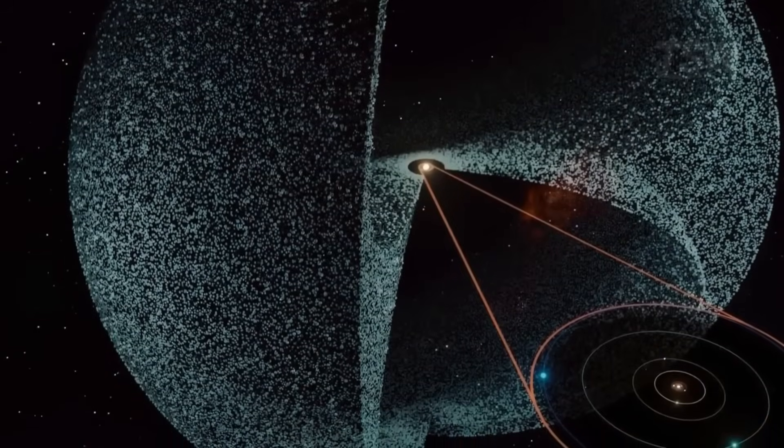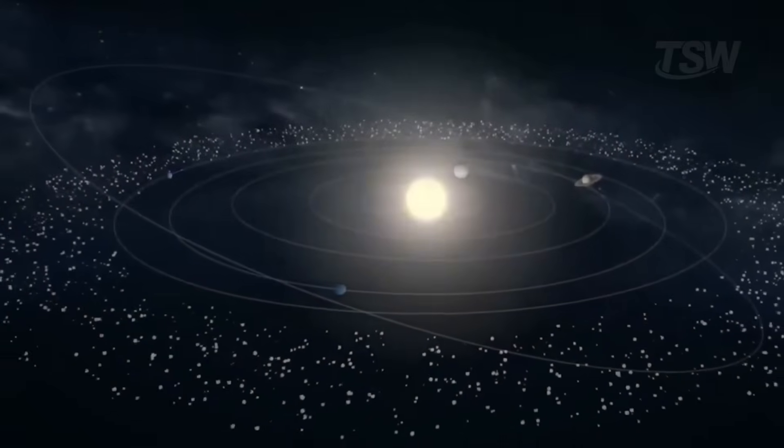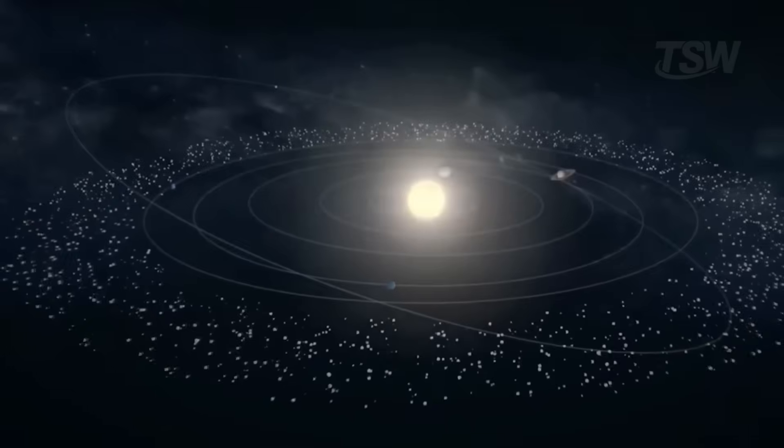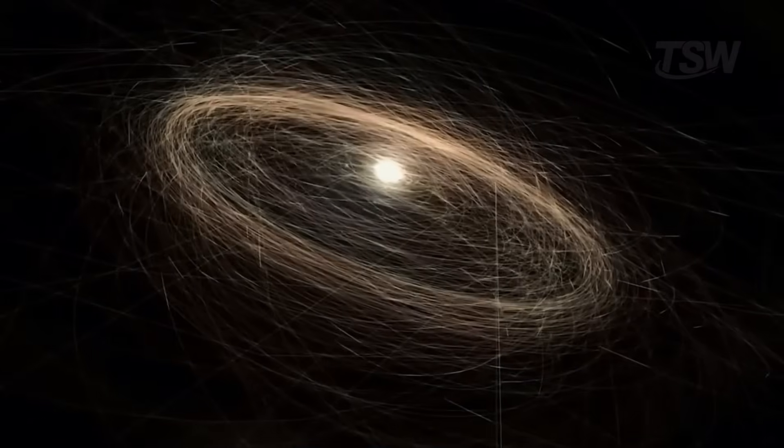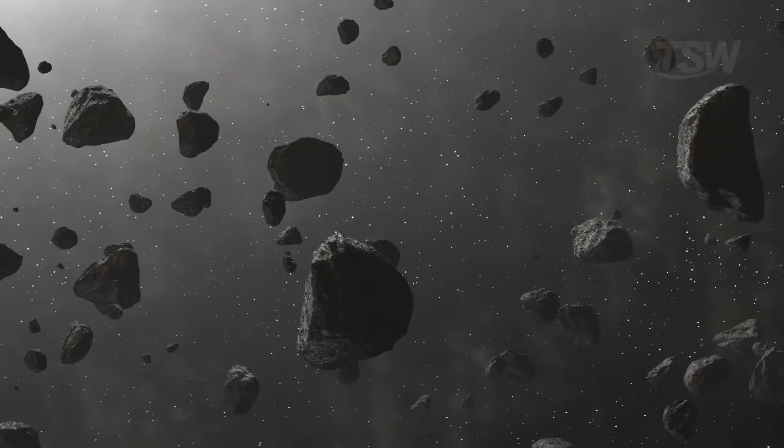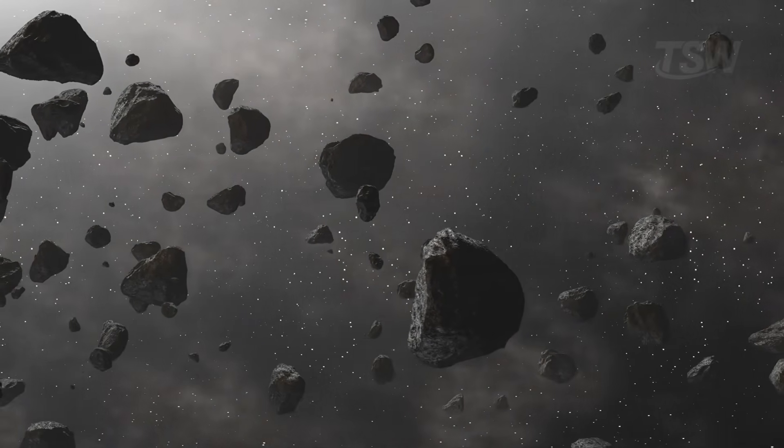These bodies, though small and remote, hold immense value for science. They are frozen relics from the birth of our solar system. Today, thousands of objects have already been cataloged beyond Neptune, and scientists estimate that tens of thousands more still await discovery.